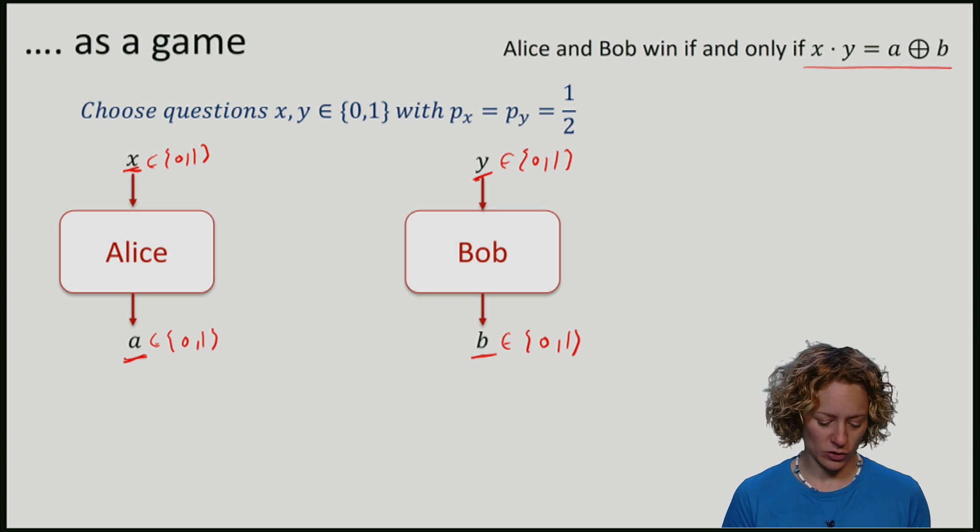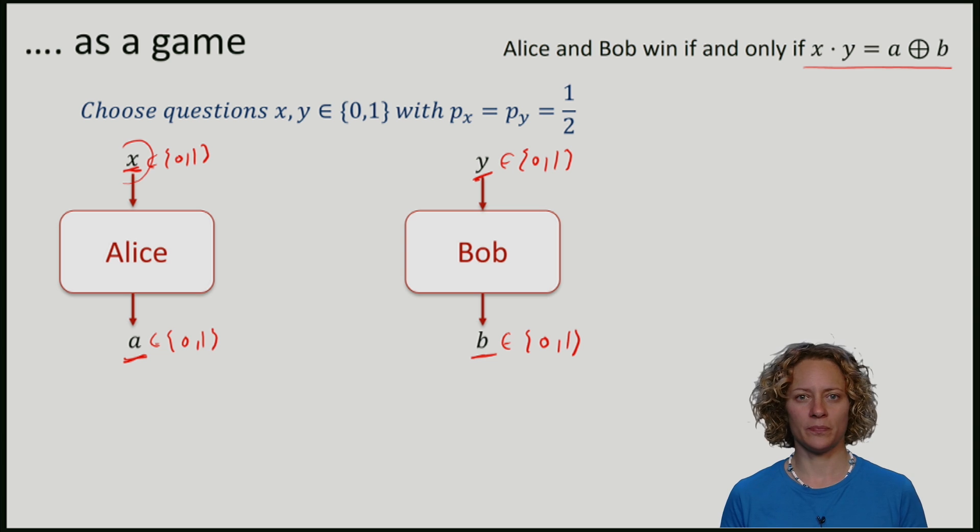Alice could just take her input x and send it over to Bob. She would always output A being 0, and now Bob who knows x, A, and y can always compute the right answer B. This is why to make this game interesting, we are going to forbid communication during the game.